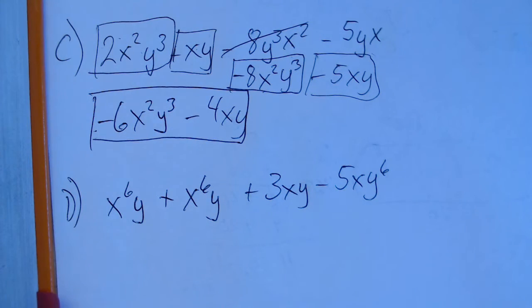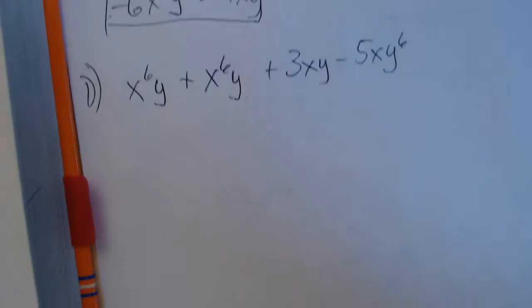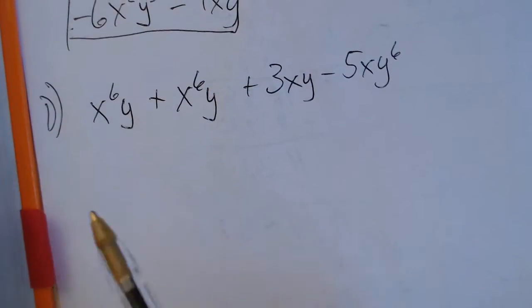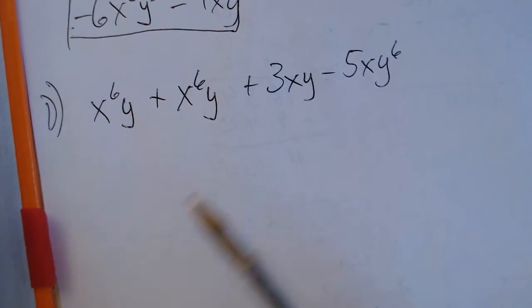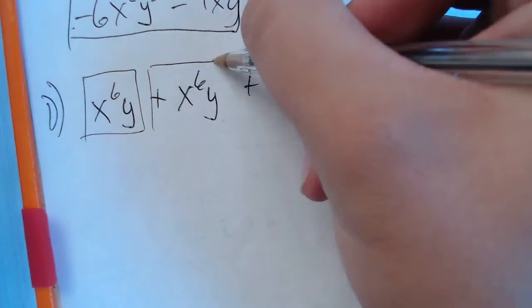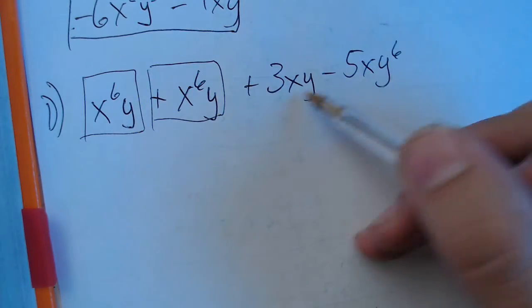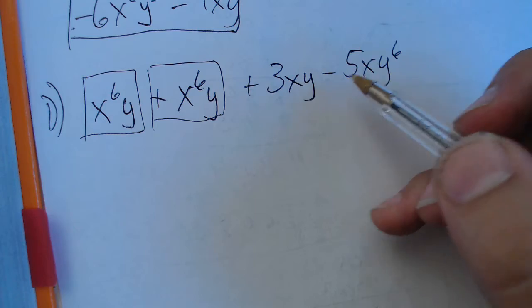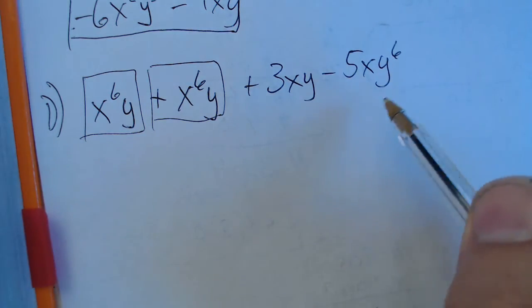Moving on to the very last one, D. So we've got alphabetical order, alphabetical order. They're all in alphabetical order. It looks like we have two like terms here and here. And then these aren't the same at all. And that's okay. We can have three different terms in our answer.